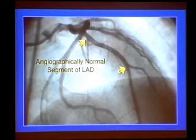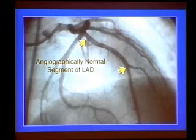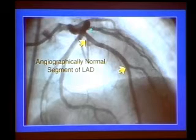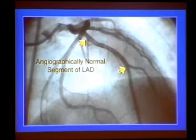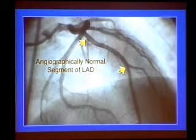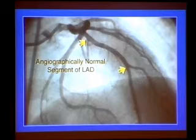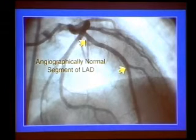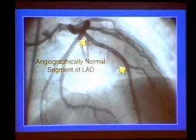Well, this patient was enrolled in a clinical trial that required us to do an intravascular ultrasound — not of the stented vessel, but of the angiographically normal contralateral vessel, the LAD. And you don't see any narrowing in that vessel. I want to take you to the cath lab and show you the angiogram and then the IVUS so that you can understand how remodeling confounds the diagnosis of coronary disease.